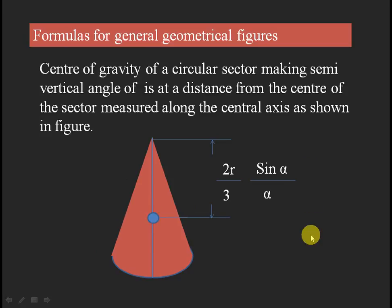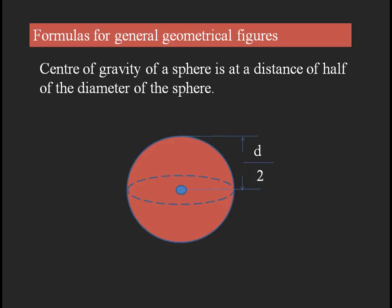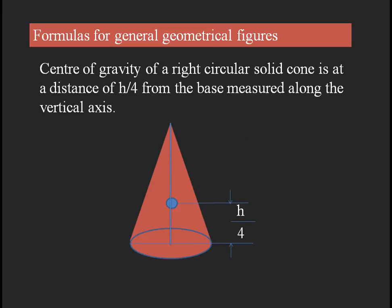The center of gravity of a sphere is at a distance of half of the diameter, that is d/2, from the top or bottom base. A sphere has the shape of a solid ball, so automatically the center of gravity is at its middle point.